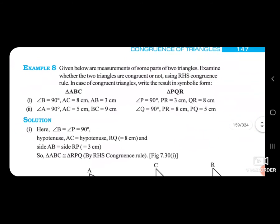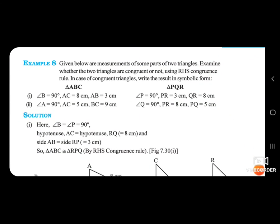So, dekho Example 8. Kya hai Example 8 — given below are measurements of some parts of two triangles. Examine whether the two triangles are congruent or not. Yahan pe do triangle hain, wo congruent hain ya nahi, wo humein dekhna hai using RHS rule. In case of congruent triangles, write the result in symbolic form.